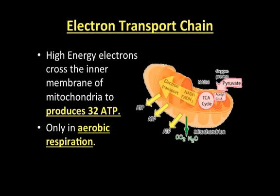The last step is the electron transport chain. Those high-energy electrons move across the membrane — from the inside to the outside — very similar to how it works within the chloroplast. Instead of producing just a few ATP, we're producing 32. This is the money step — the cha-ching, I just made 32 ATP. This is where most of the ATP get generated. So for aerobic respiration: 2 from glycolysis, 2 from the Krebs cycle, and 32 from the electron transport chain — giving us a total of 36. This can only happen if oxygen is present.